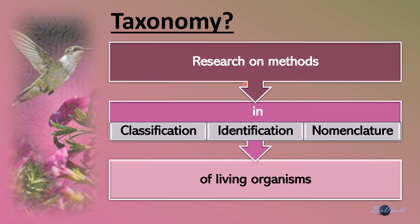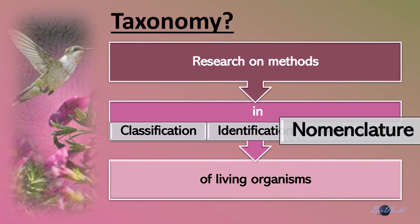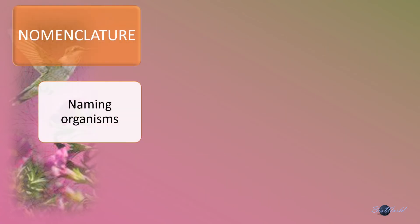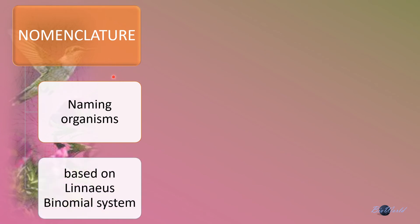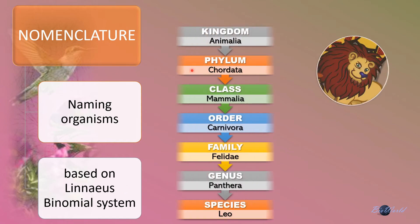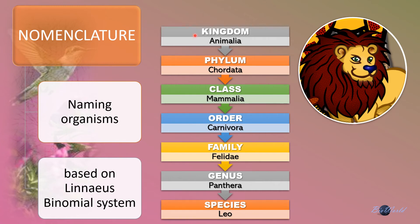Returning to the definition of taxonomy, we look at the final keyword, that is nomenclature. Nomenclature is the process of giving the organism a scientific name based on the Linnaeus binomial system. Remember, to identify we use the Linnaeus hierarchy system that has seven taxons. But to give nomenclature to the organism — that is, to give it a scientific name — we use the Linnaeus binomial system that only involves two taxons.